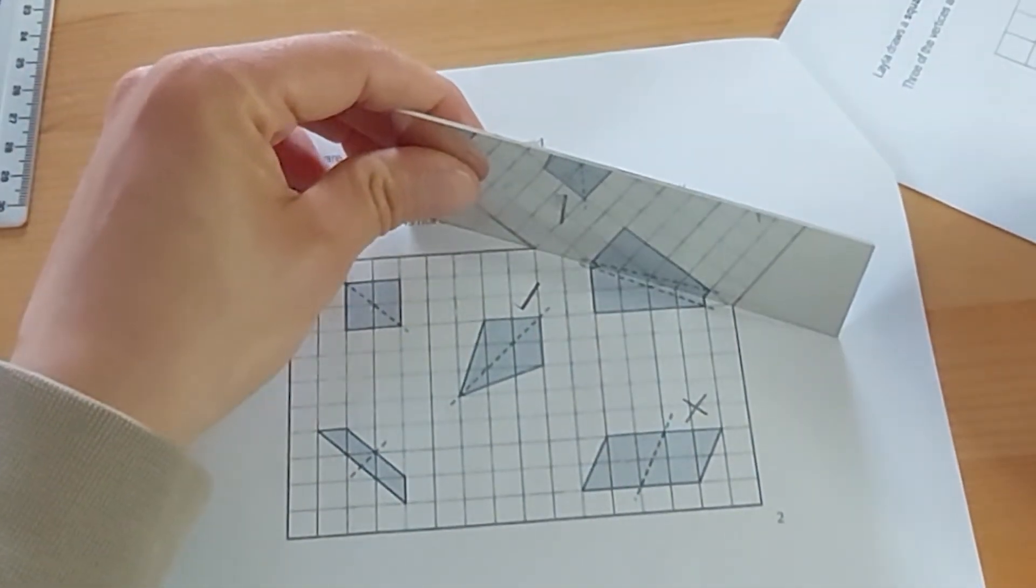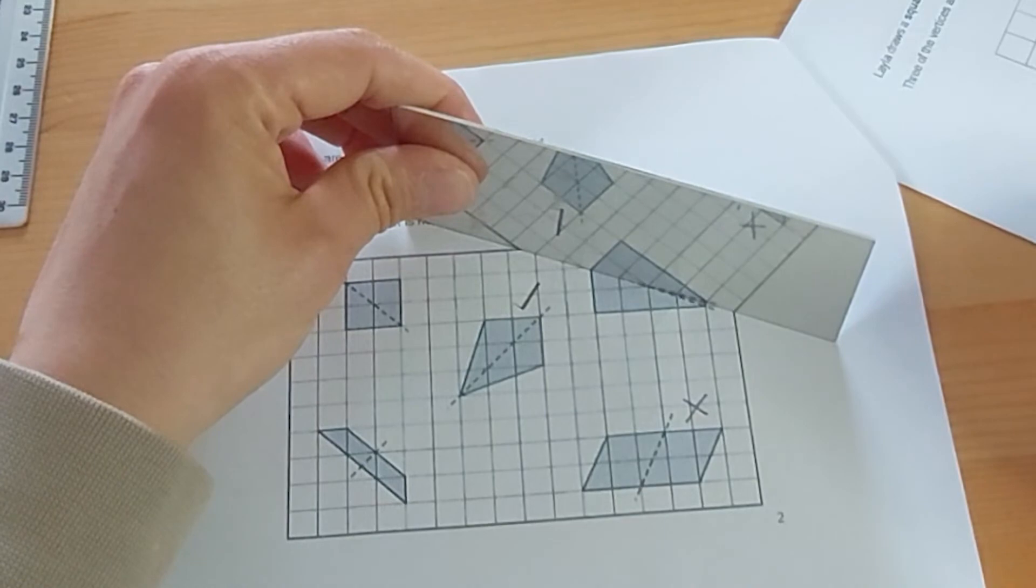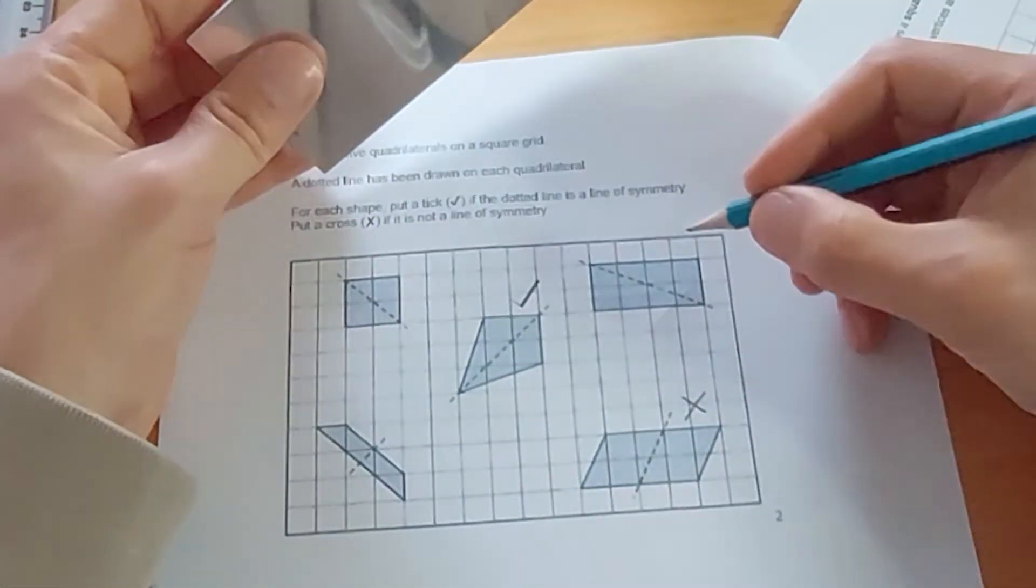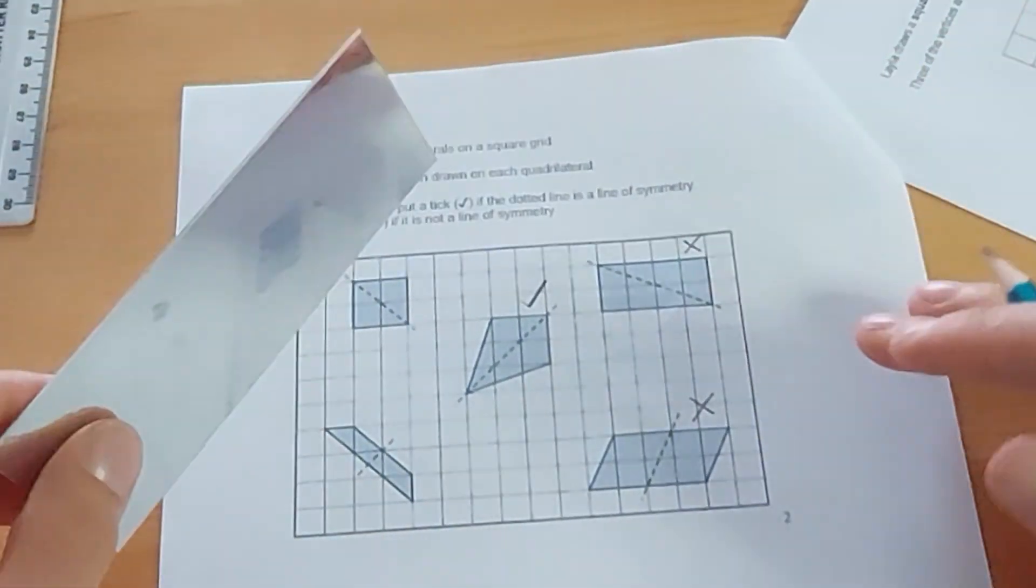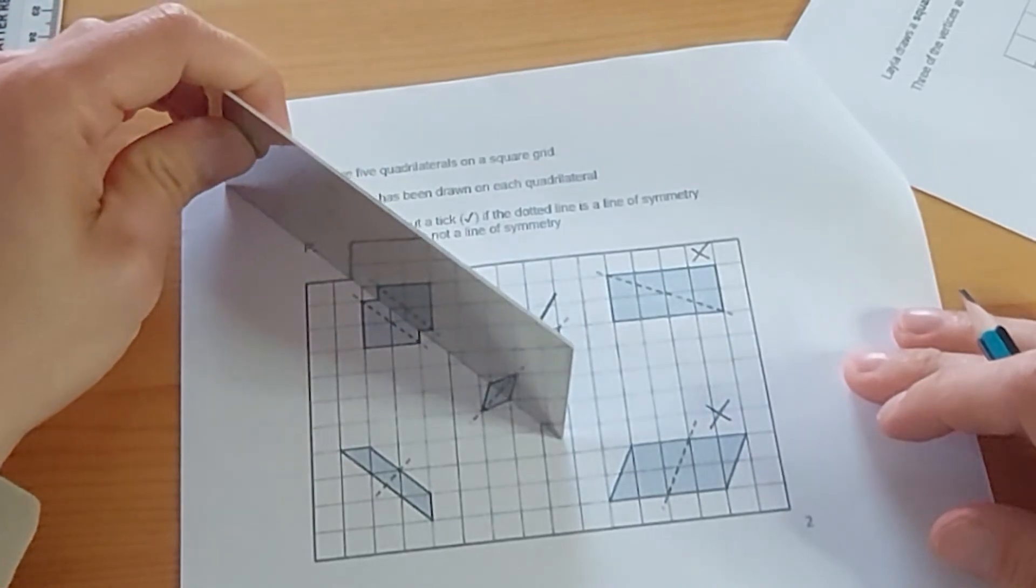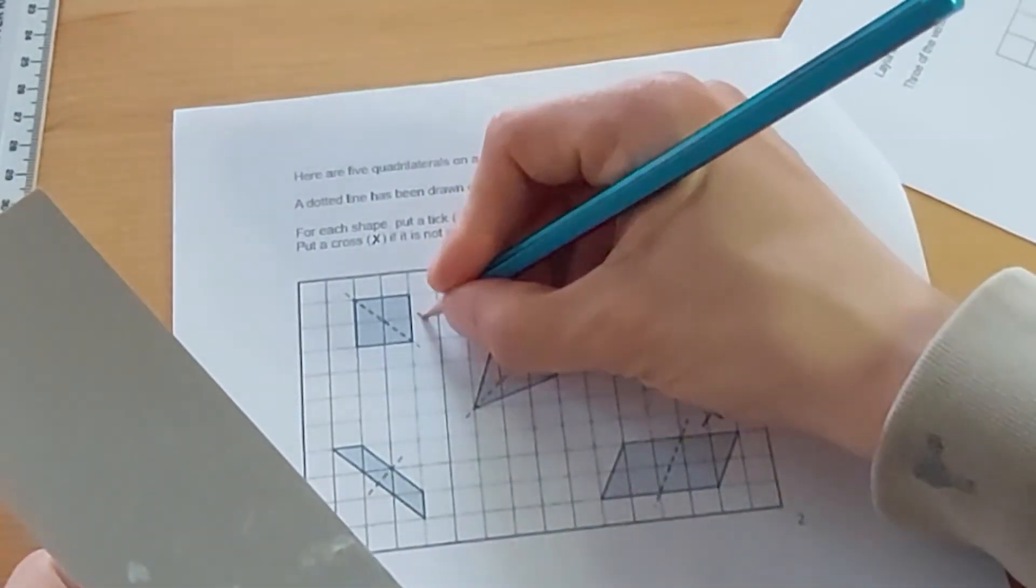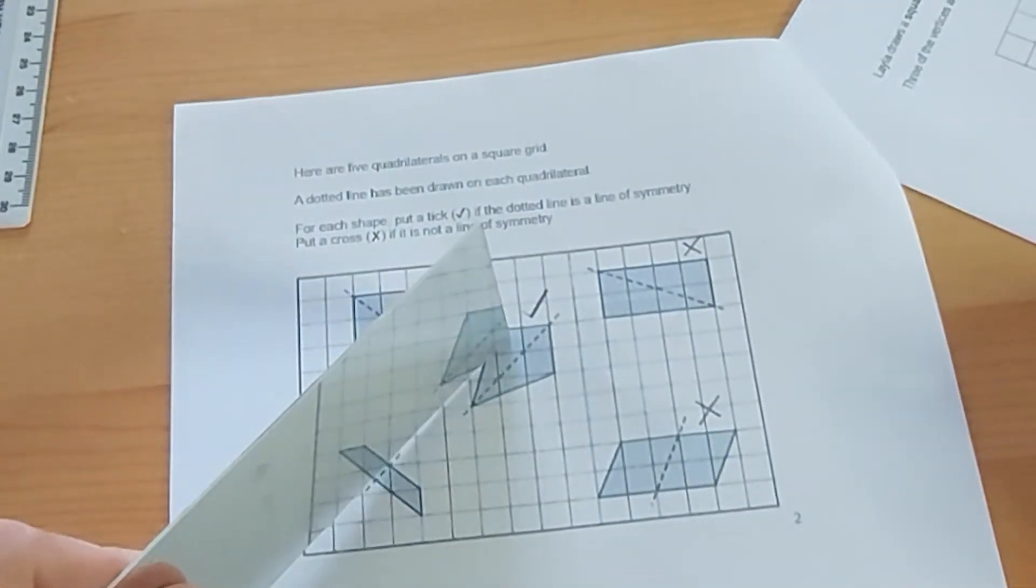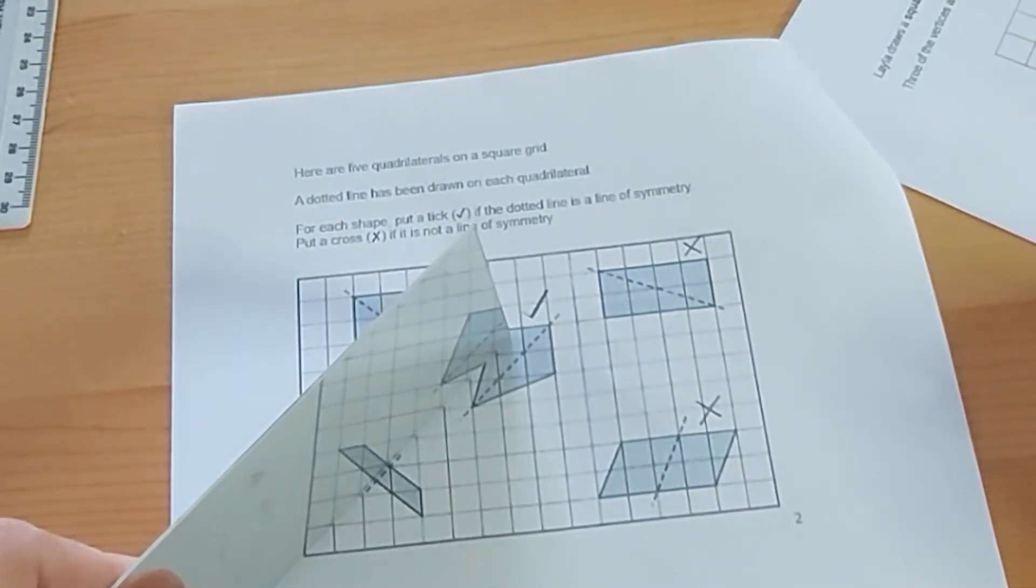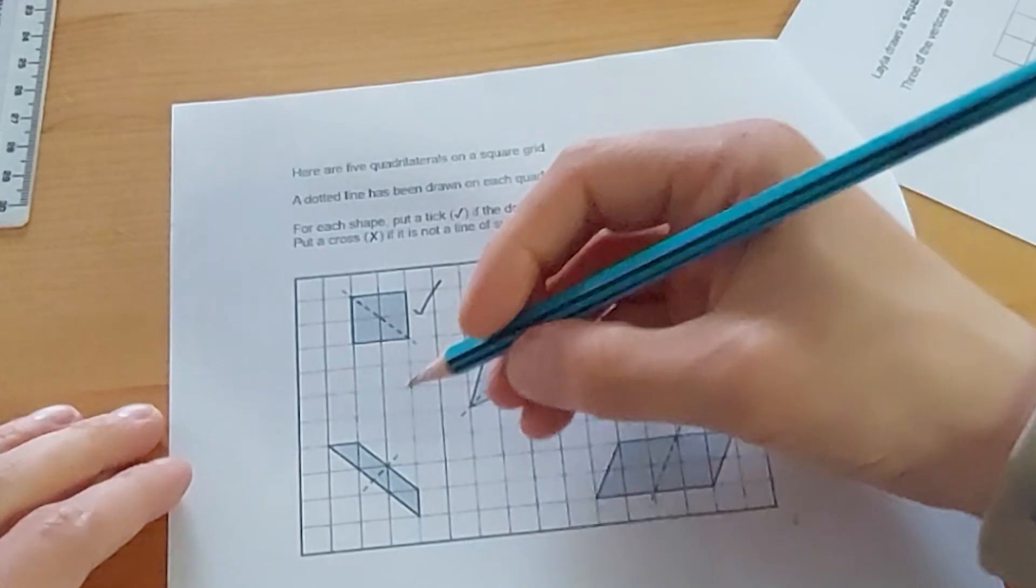This one. Is that the same? No, it is not. So that would be a cross on that one. This one. That one is the same both sides. So that is a line of symmetry. And finally, this one. Yeah, we have a line of symmetry there.